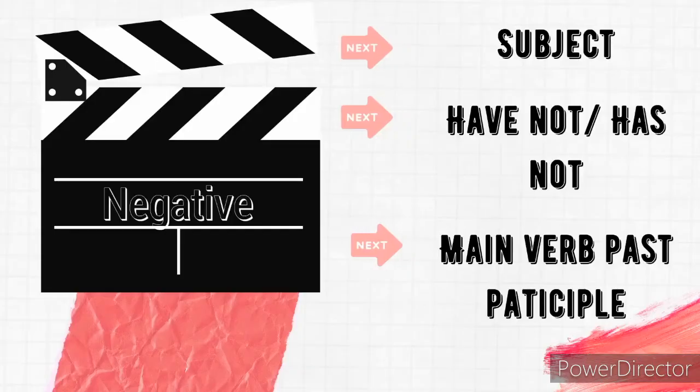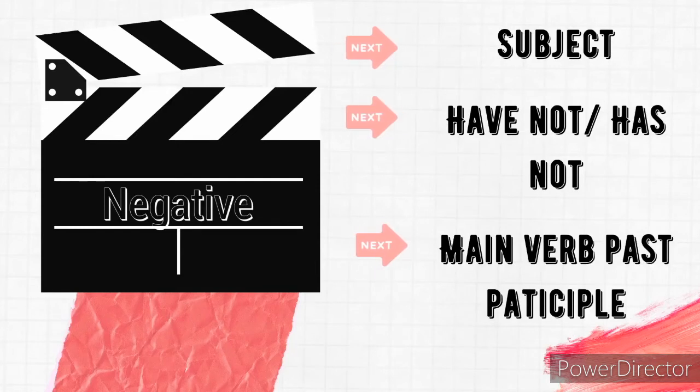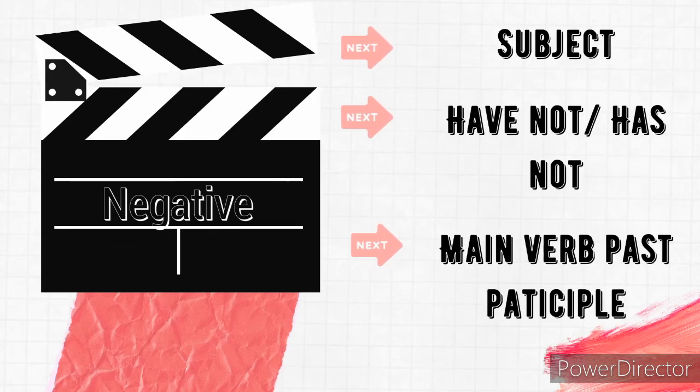For the negative form, it is: subject plus have not or has not, and then the main verb in past participle.